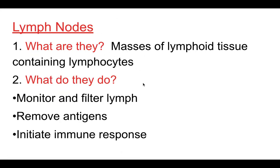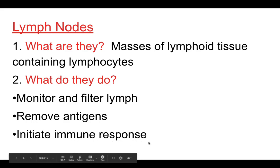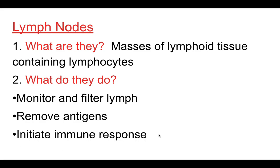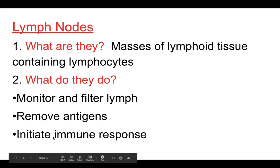Lymph nodes are just masses of lymphoid tissue — a mass of tissue with a whole bunch of lymphocytes in it. Those T cells, B cells, and NK cells, when they're not active and not doing their job, hang out in your lymph nodes. They monitor and filter lymph, remove antigens, and initiate the immune response. For instance, if someone had COVID-19 and got over it, their body has built up an immunity to the antigens on that virus. If they come in contact with it again, the cells inside their lymph nodes say, 'I got this,' and go kill it off.